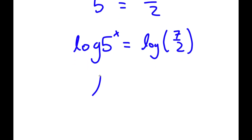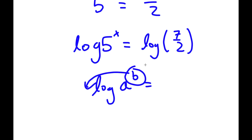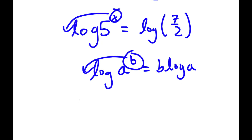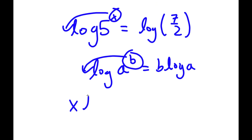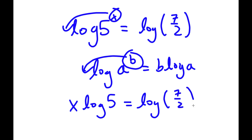If I have something in the form log a to the power of b, I can move my exponent b to the front, so I get b times log a. So in this case, I have log phi to the power of x, so I can move x to the front, and I get x times log phi is equal to log 7 over 2.